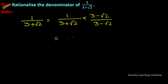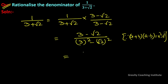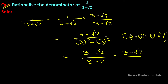This gives 3 minus root 2 in the numerator. In the denominator, we use the identity (a + b)(a - b) = a square minus b square, so we get 3 square minus root 2 whole square, which equals 9 minus 2 = 7. Therefore the answer is 3 minus root 2 upon 7.